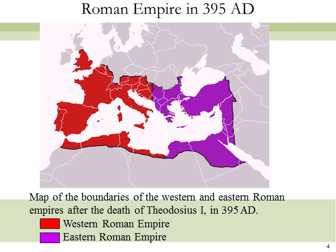In 324, when Constantine founded Constantinople, or Constantine City, on the site of ancient Byzantium, he legitimately could claim to be ruler of a united Roman Empire. But when Theodosius I died, he divided the empire between his sons: Arcadius, the elder brother, became Emperor of the East, and Honorius, Emperor of the West.